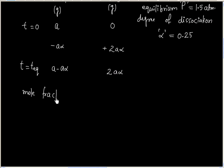We can calculate mole fraction of NO2. This is moles divided by total moles. Total moles is A minus A alpha plus 2A alpha.